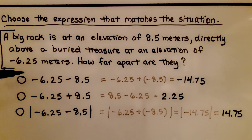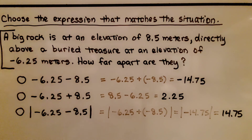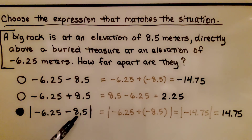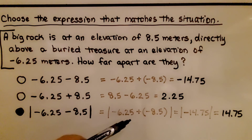For the first expression, we added the opposite and like signs gave a negative sum. For the second, unlike signs meant we found the difference and took the sign of the greater absolute value. For the third, we added the opposite of the absolute values and used the absolute value of their sum because distances are always positive. The correct expression that matches this situation is the last one. The rock is at a positive elevation of 8 and 5 tenths, directly above the buried treasure at negative 6 and 25 hundredths meters underground, and the distance between them is 14 and 75 hundredths.